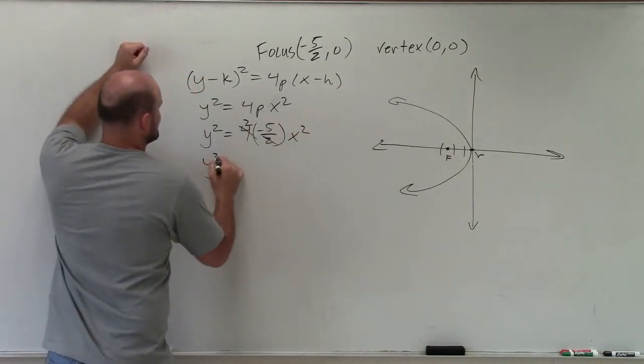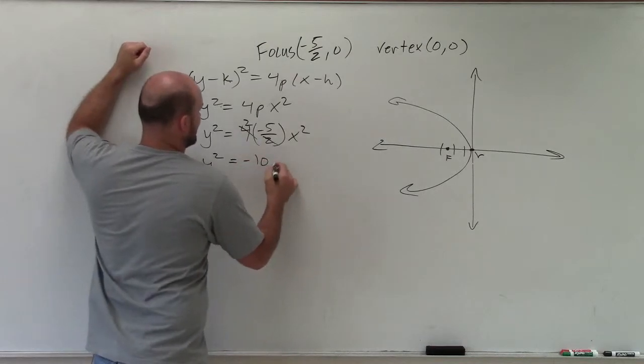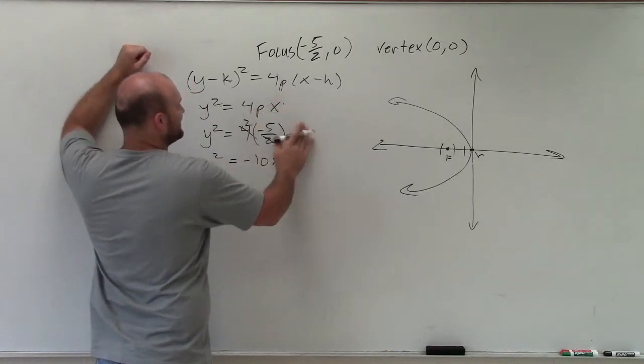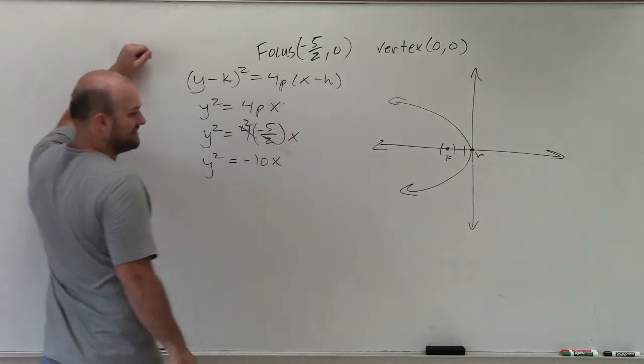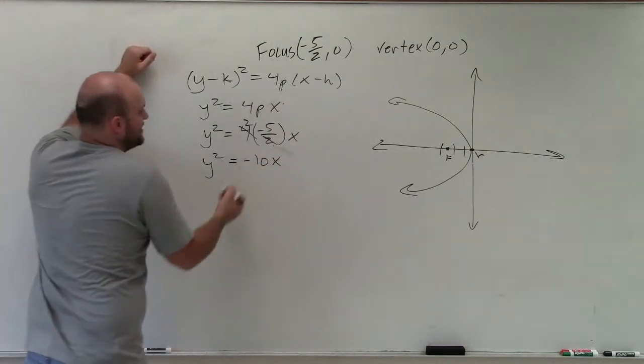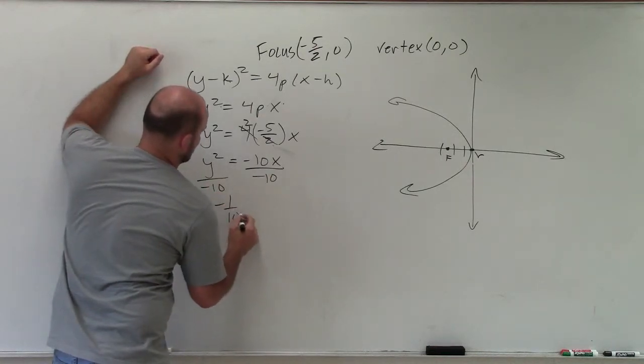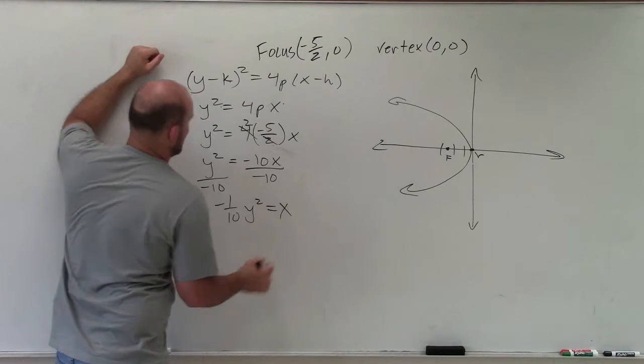We'll multiply across. We have y squared equals negative 10x squared. Where did x squared come from? Sorry about that. Negative 10x. So then, to solve for x, I'll just divide by negative 10.